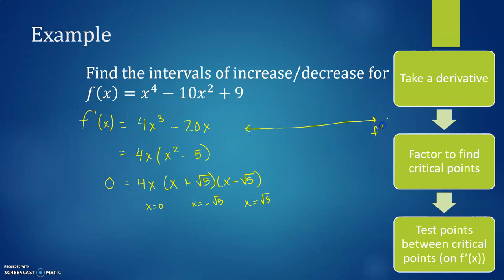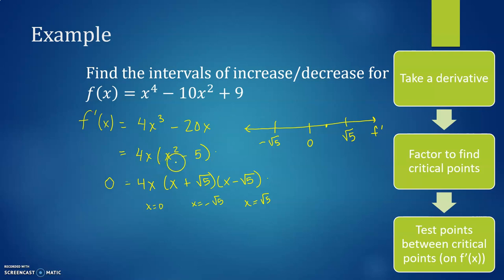I'm going to draw a number line for F prime with x = 0, x = −√5, and x = √5 marked. I strongly recommend using the factored version as you test points. I know that 1 is between 0 and √5, so I'll look at F prime at x = 1: I have 4(1)(1 − 5) = −4, which is a negative value for F prime.